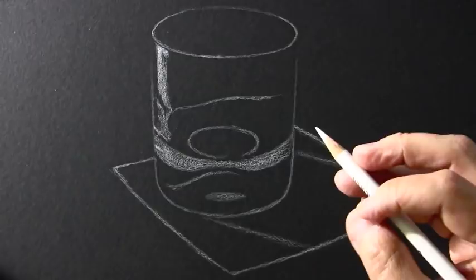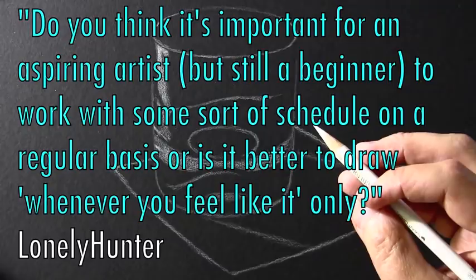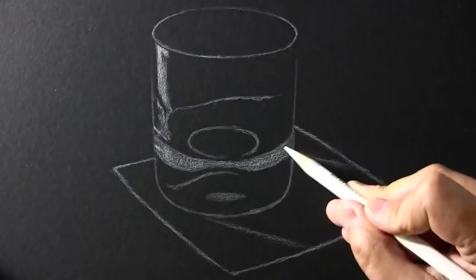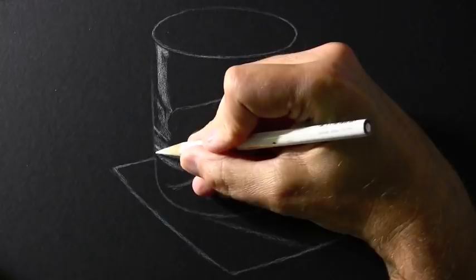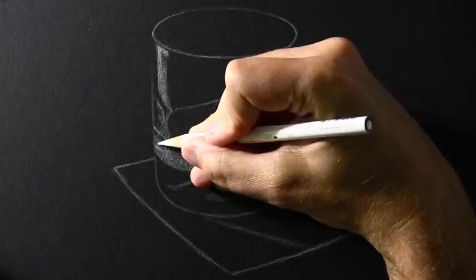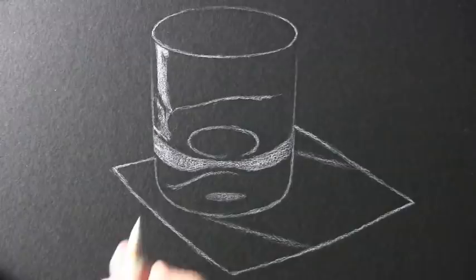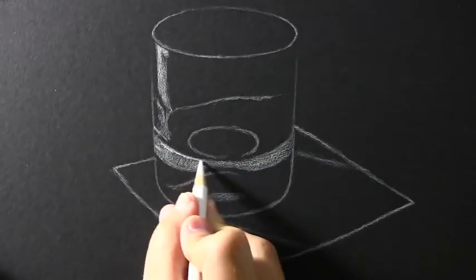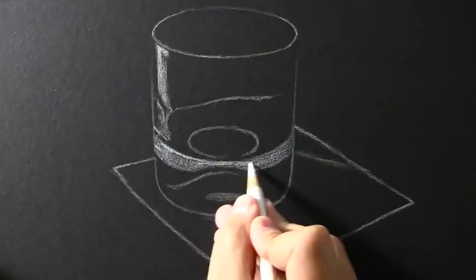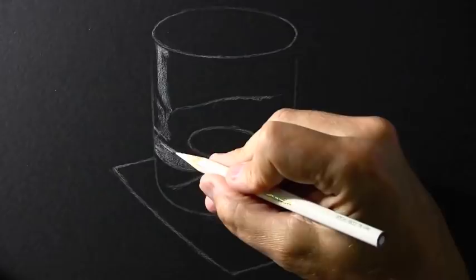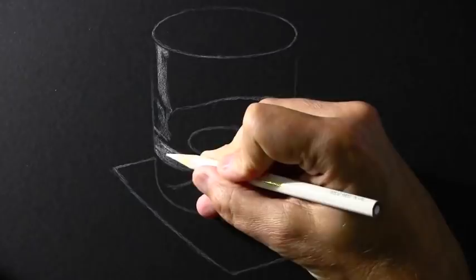I'm a big believer in reference. It's important to look at an actual object if you're trying to learn how to draw it. No reason to try to commit it all to memory when you can just look at it. Leonardo da Vinci looked at the Mona Lisa, right? He didn't try to just commit her face to memory. There's no shame in using reference and looking at the thing that you're trying to draw. Let's get on to this next question from Lonely Hunter: Do you think it's important for an aspiring artist, but still a beginner, to work with some sort of schedule on a regular basis, or is it better to draw whenever you feel like it only?